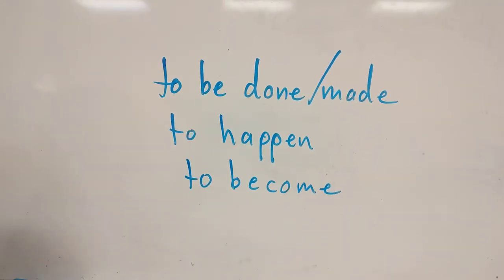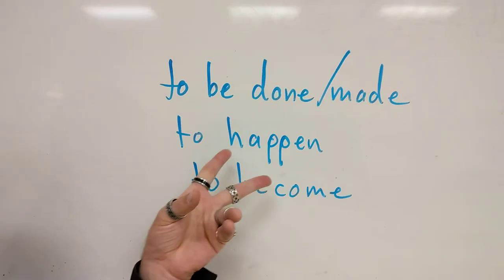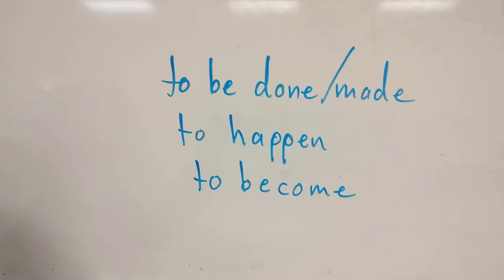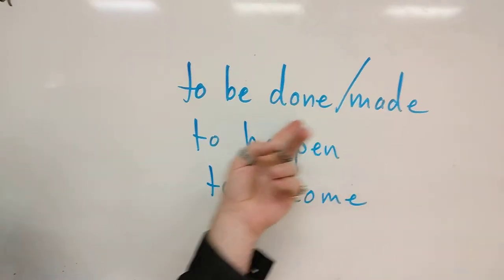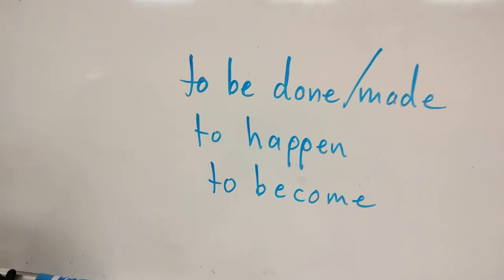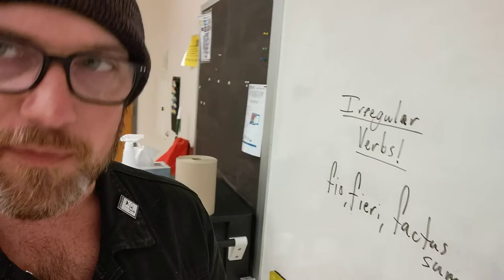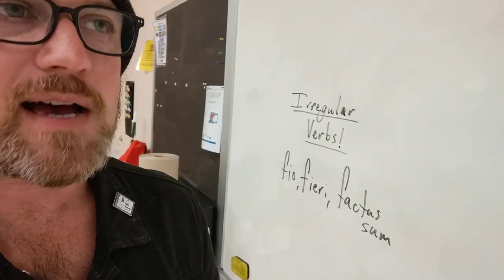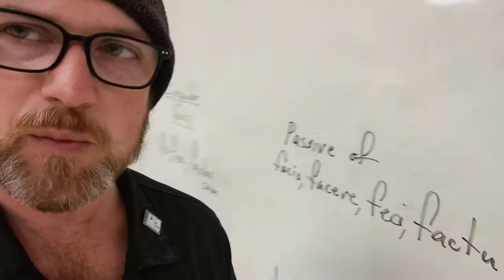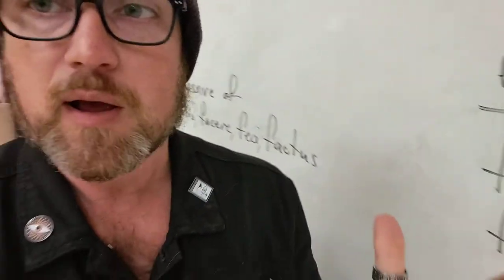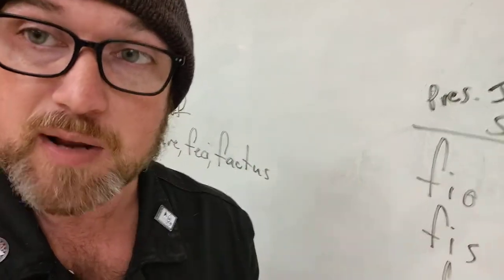For something to happen is sort of the same as saying to be done. So often you'll end up translating one of these two ways. Now here's what's weird about it: it's definitely irregular and it does not look passive, but it is. That's why I say it's sort of the opposite of a deponent. Deponents look passive but they're active.